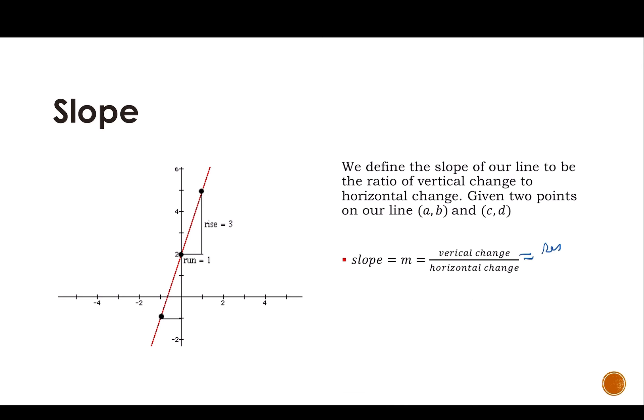Some people also say it's our rise over our run. So this example has a slope of 3 because we go up 3 over 1. 3 over 1 is 3.